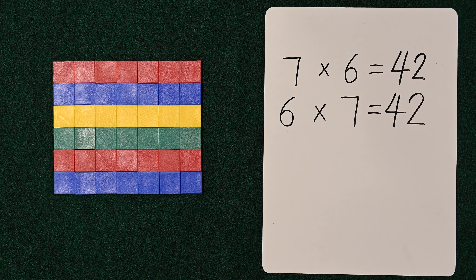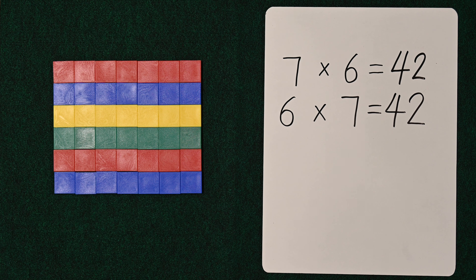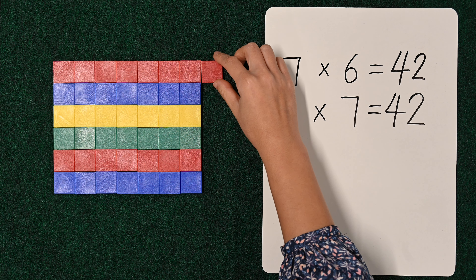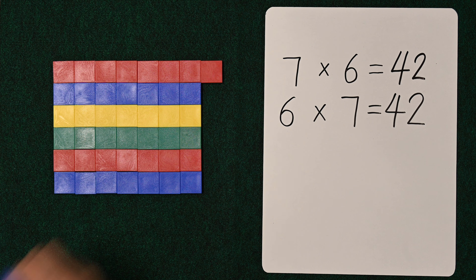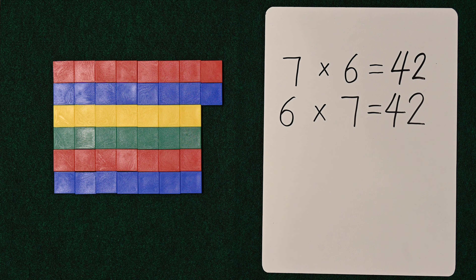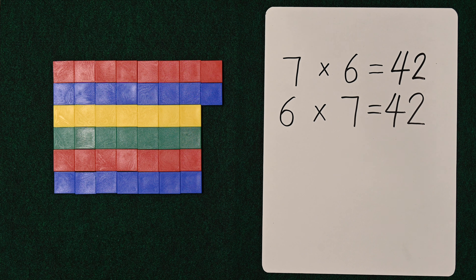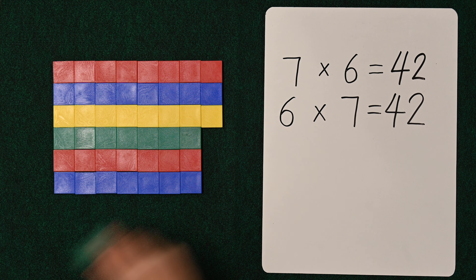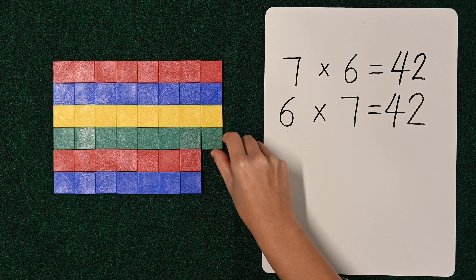Eight sixes. Now let's see if we add one more column to get eight sixes. We're adding a column of six.